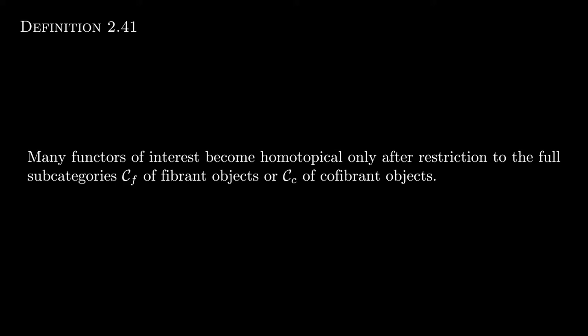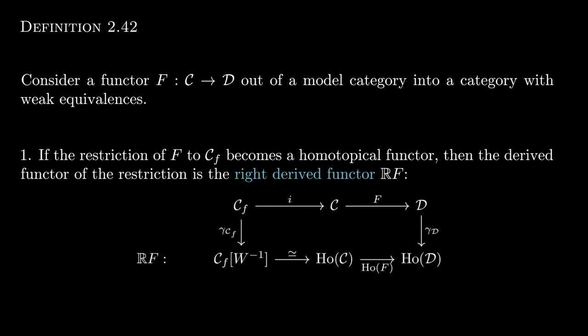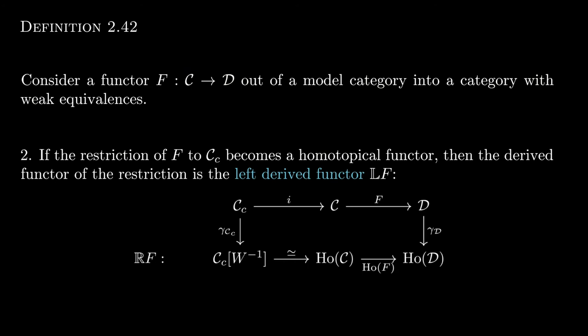To be more explicit: consider a functor F that, when restricted to the full subcategory of fibrant objects, becomes a homotopical functor. Then we call the resulting induced derived functor the right derived functor of F, RF. Dually, if the restriction to cofibrant objects makes it a homotopical functor, then we call the induced derived functor the left derived functor of F, LF.